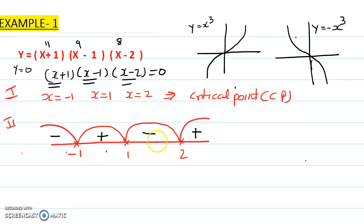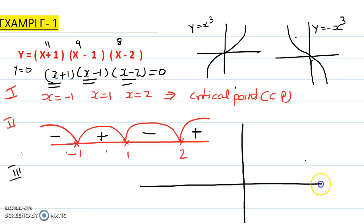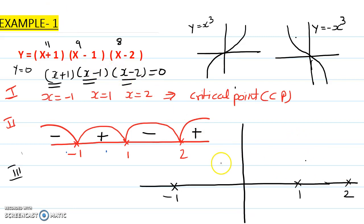It is following an alternate sign pattern. The third part — sketching — is very easy. I have drawn the diagram here. Let's write down the critical points: -1, 1, and 2. I'm going to plot the graph now.